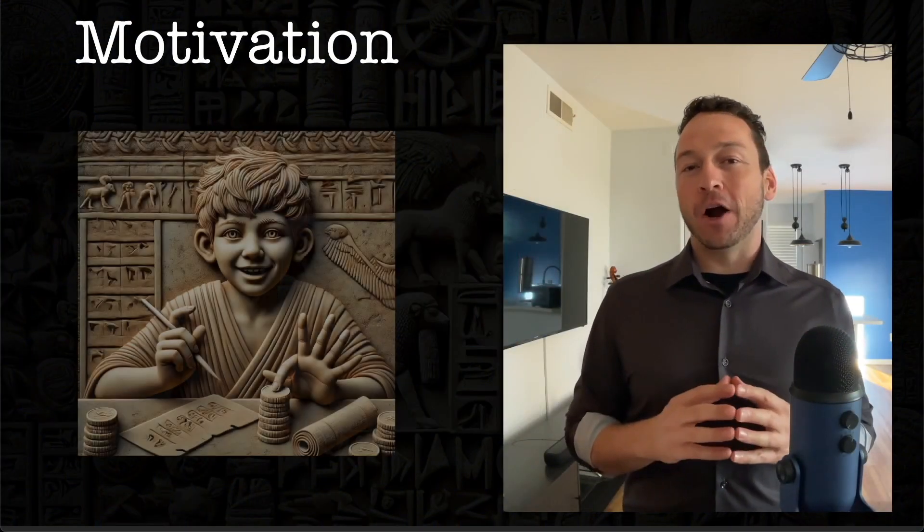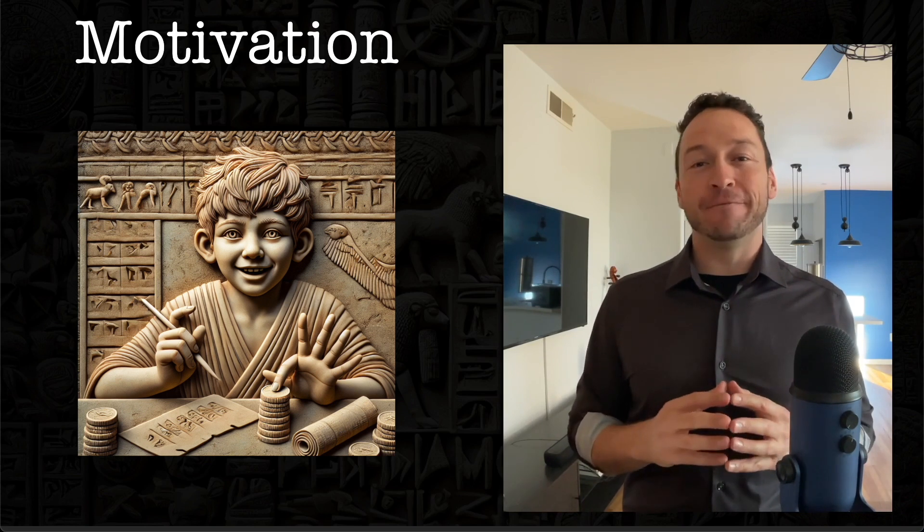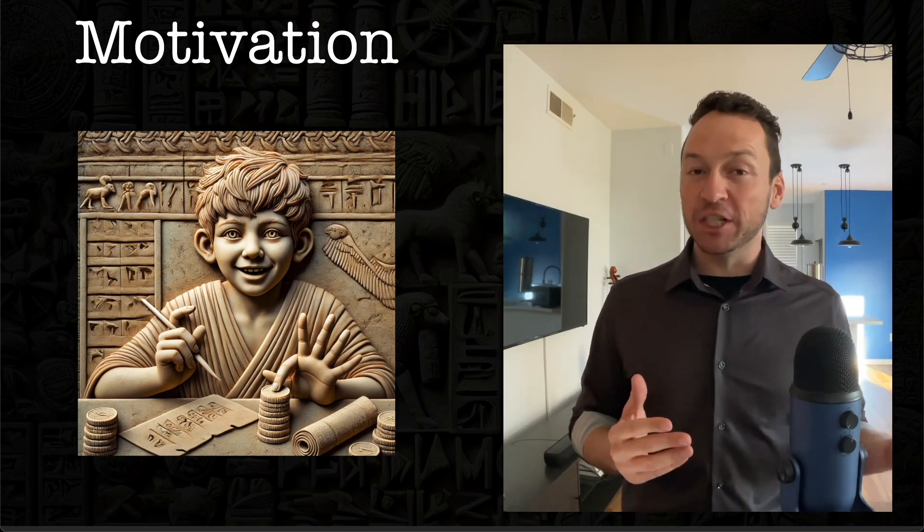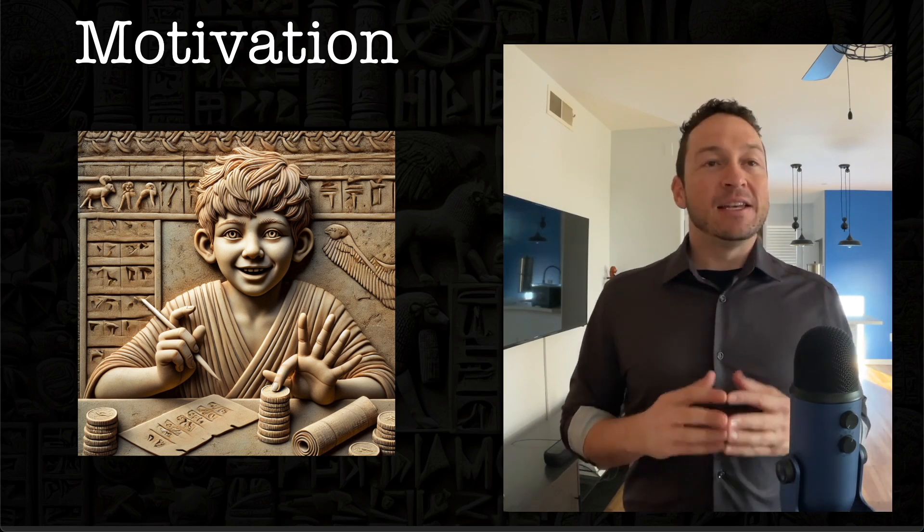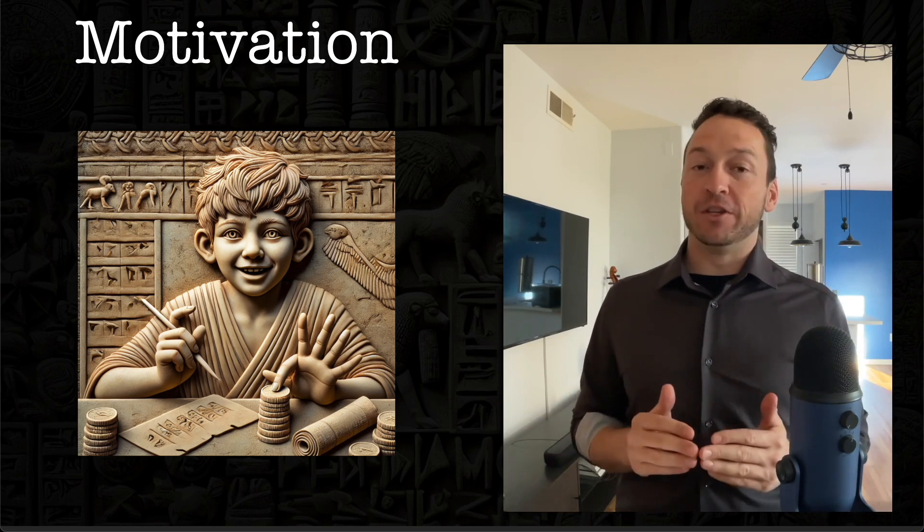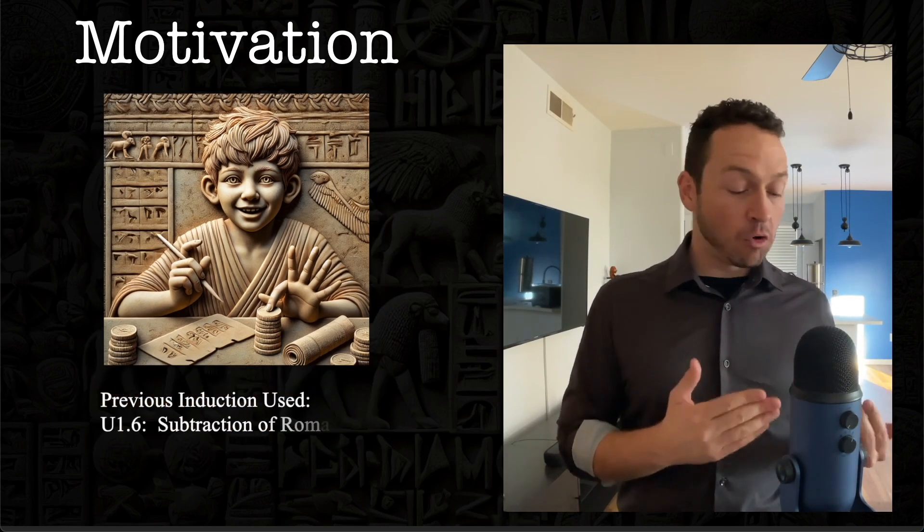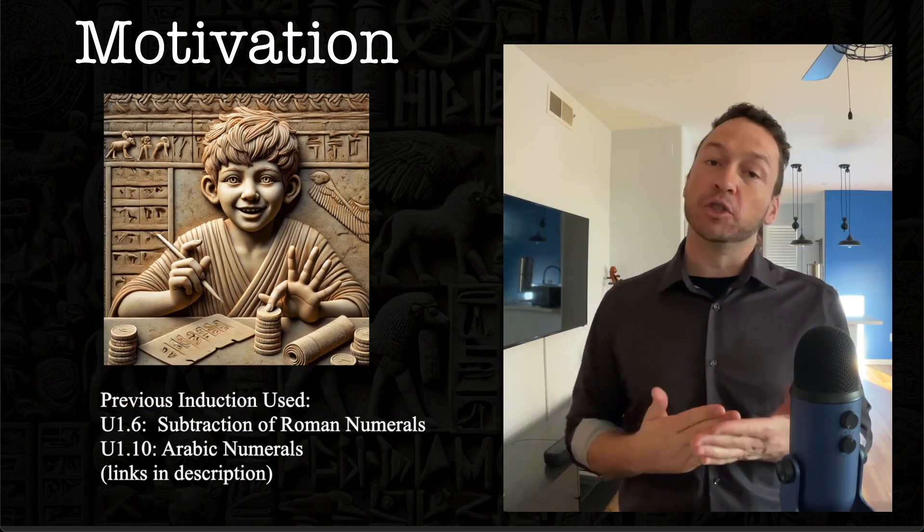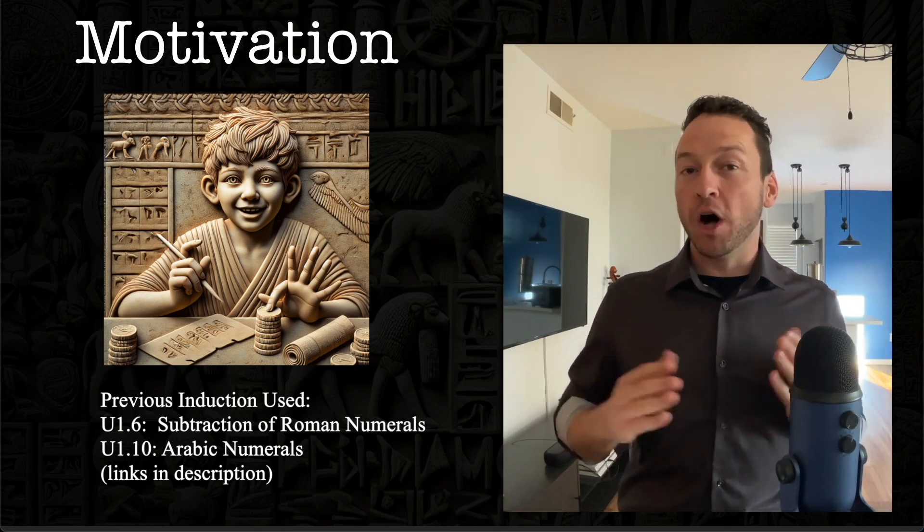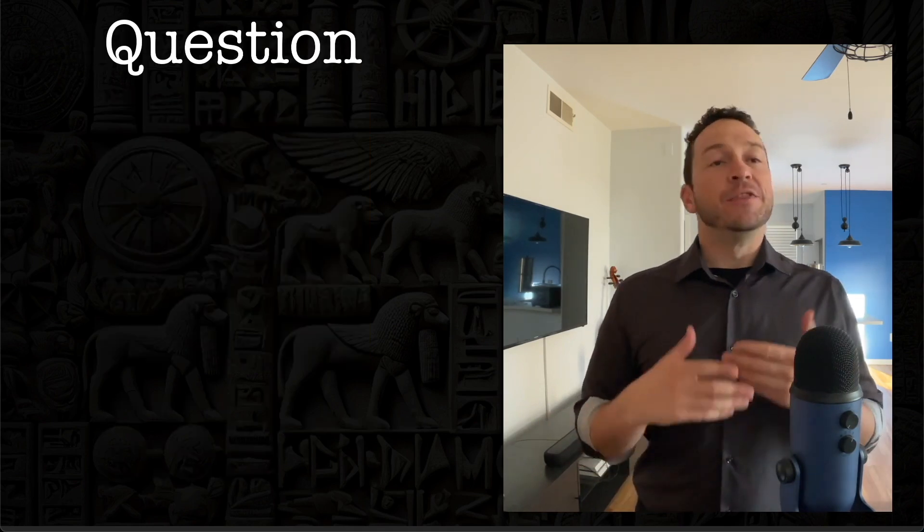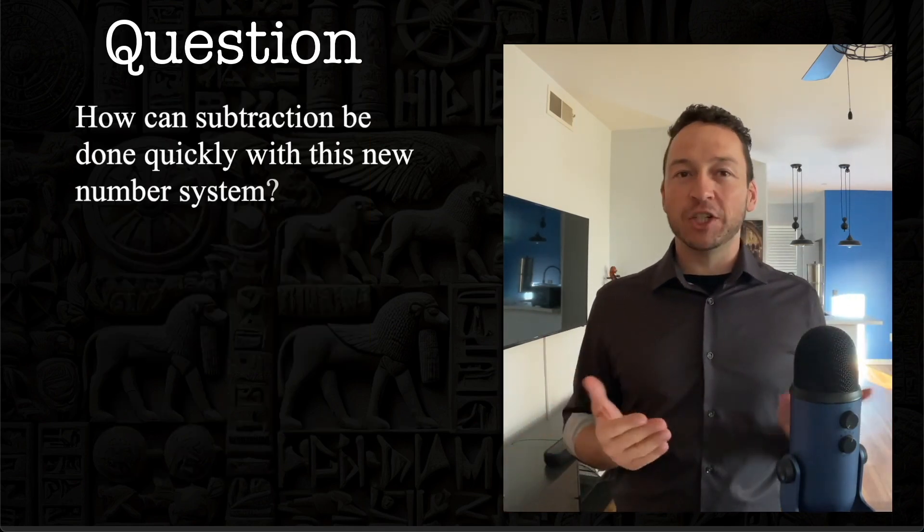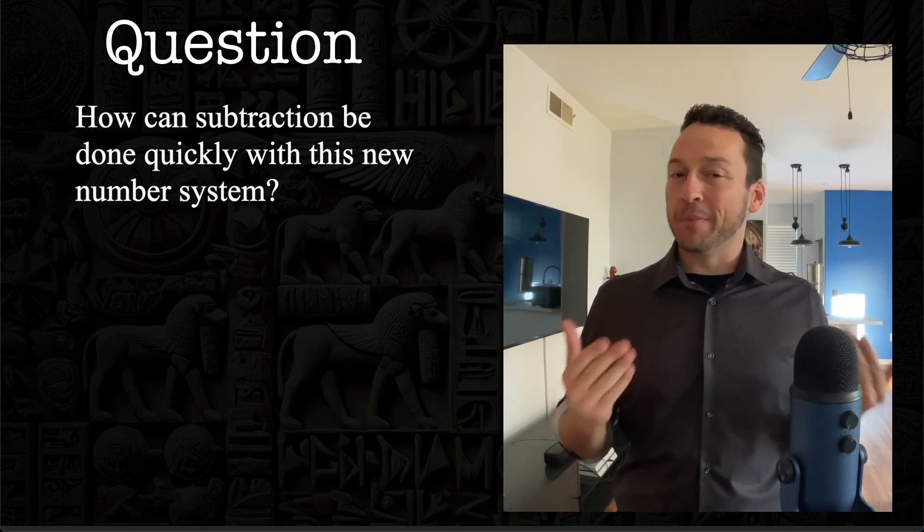Last time, we followed our new hero, Algamesh, as he invented his own system of numbers and invented a system of addition for that new number system. Now, Algamesh is motivated to find a system of subtraction for his new number system. After all, since Roman numerals can add, subtract, multiply, and divide, Algamesh is going to need his system to do all four of those operations. This leads Algamesh to the following question: How can subtraction be done quickly with my new number system?